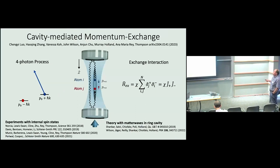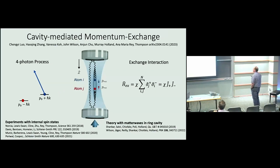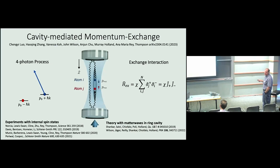Now I'll switch to talk about something more recent: cavity-mediated momentum exchange, described in a paper on the archive in collaboration with Murray Holland's group and Ana Maria Rey's group. The basic idea: imagine two atoms inside this cavity falling with average momentum p₀, but one is at p₀ minus ℏk and the other at p₀ plus ℏk, where k is 2π/λ for the light we apply to cause Bragg transitions.